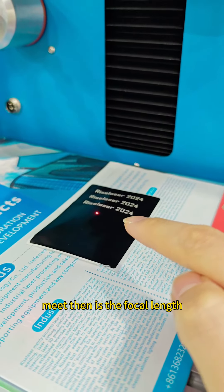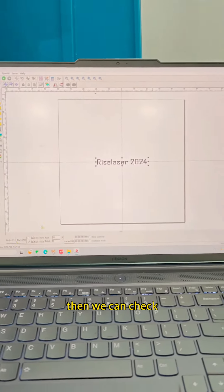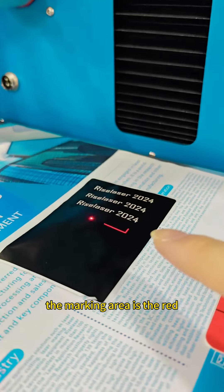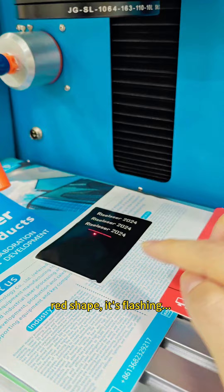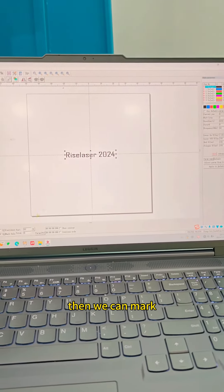Then we can check the marking area. If the red shape is flashing, then we can mark.